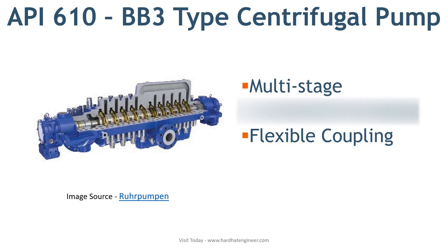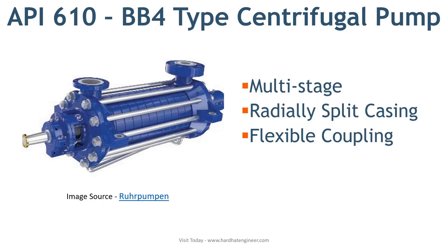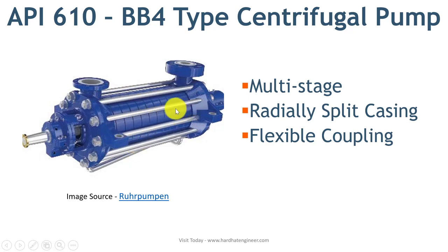Next is BB4 type centrifugal pump. In this API pump design, each stage of the pump is like a ring and connected through tie rods around them. As you can see in the image, this is why it is called a ring section pump. Each stage is radially split and installed on a shaft supported by bearings at both ends.